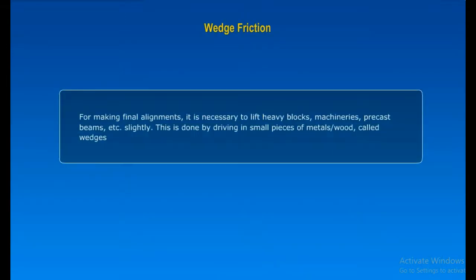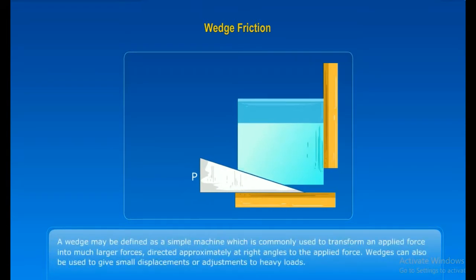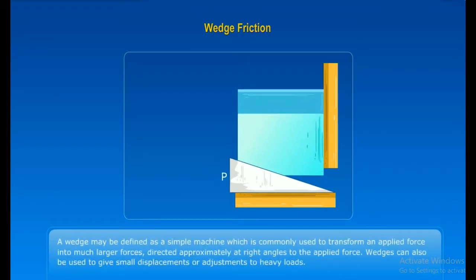Wedge Friction. For making final alignments, it is necessary to lift heavy blocks, machineries, pre-cast beams, etc. slightly. This is done by driving in small pieces of metals or wood called wedges. In the picture, you can see that wedge P is introduced to lift the block up. A wedge may be defined as a simple machine which is commonly used to transform an applied force into much larger forces directed approximately at right angles to the applied force. Wedges can also be used to give small displacements or adjustments to heavy loads.